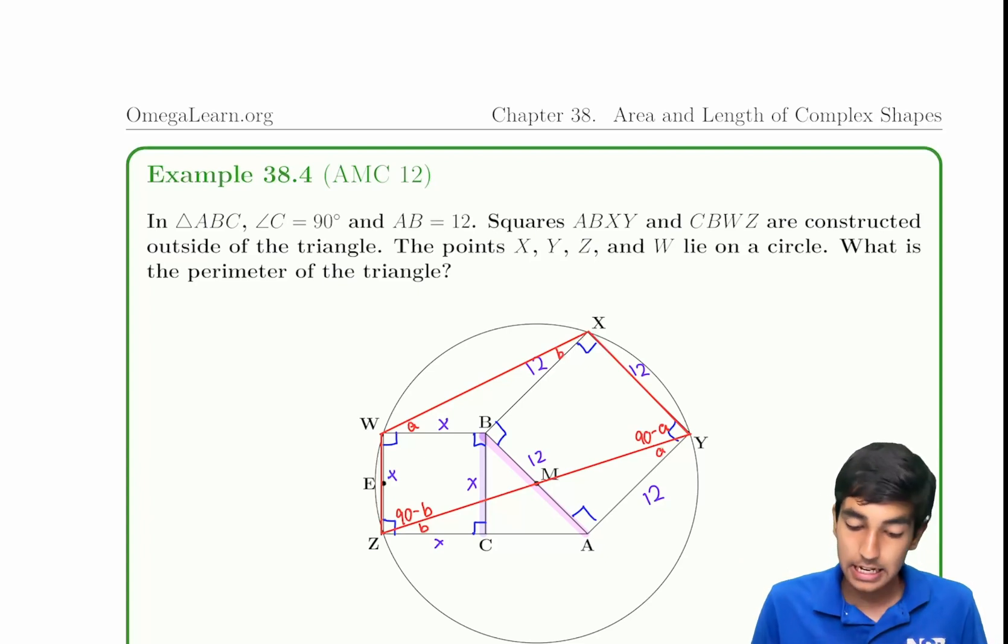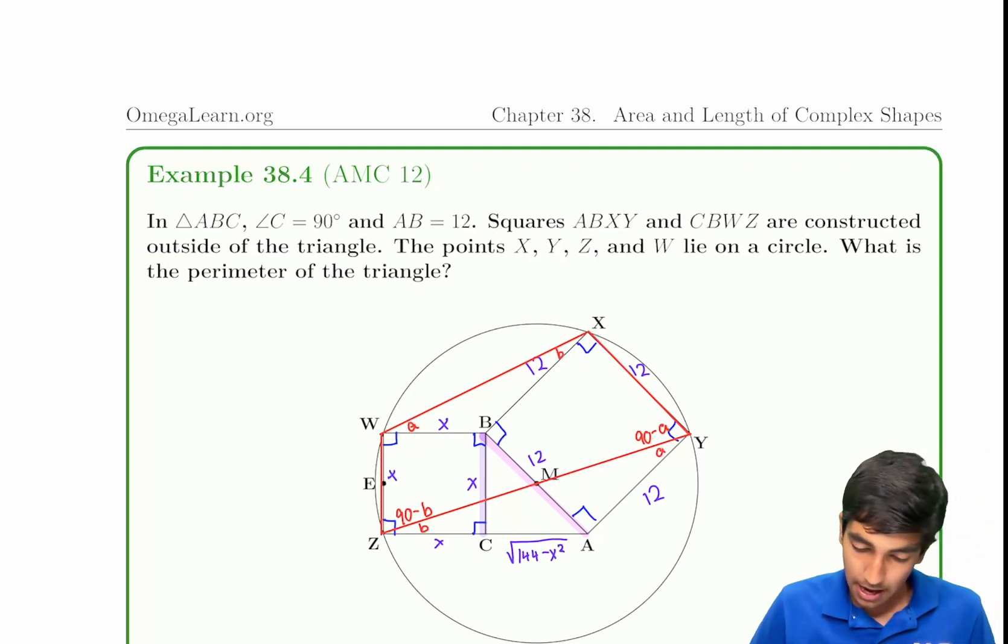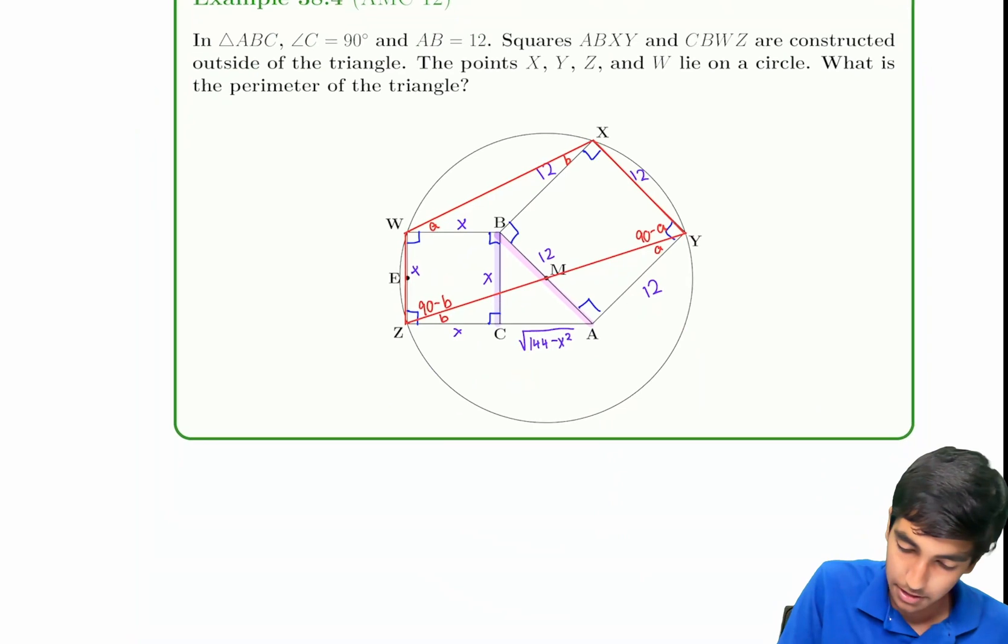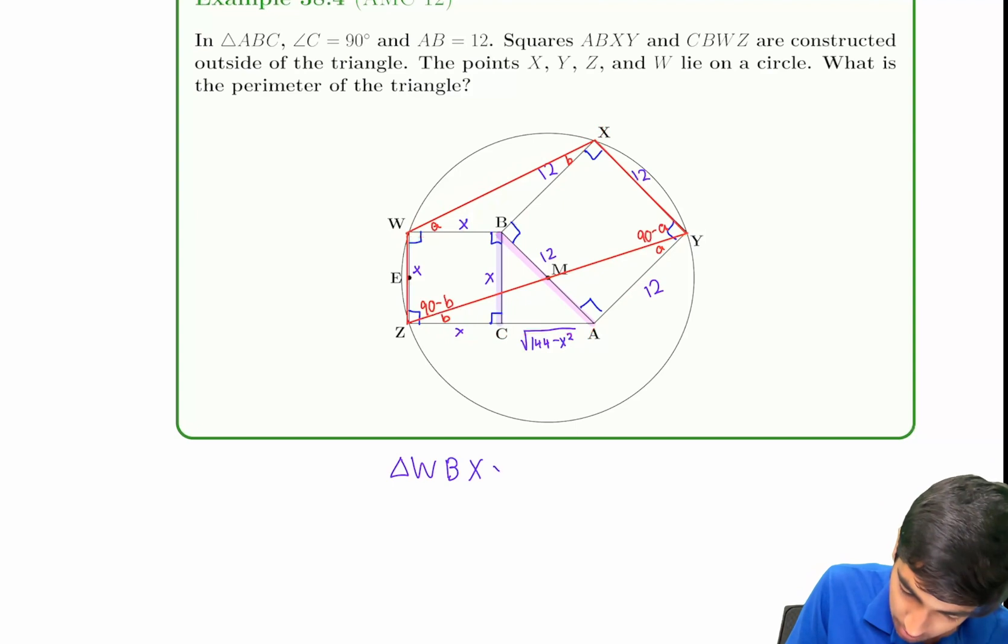Now let's try to use our similarity condition. This is X, X. Let's write our similarity condition first. We have triangle WBX similar to triangle YAZ.